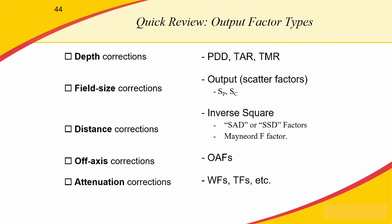A quick overview of what we've talked about and what we've learned: we've talked about depth, field size, and distance correction factors, and the dose ratios we use to make these corrections. We've also talked about other types of correction factors, such as off-axis factors or any attenuation factor we would use to account for external devices attached to the machine that may affect the beam during treatment.